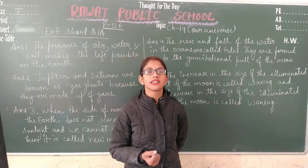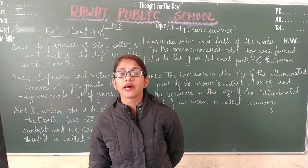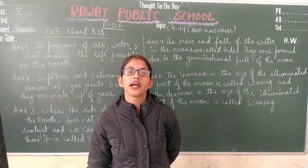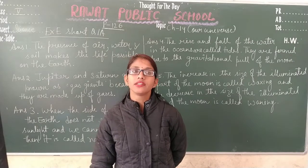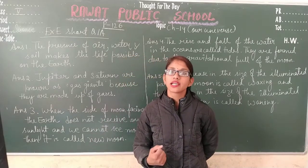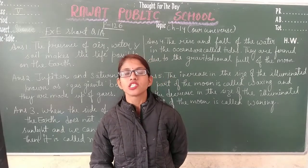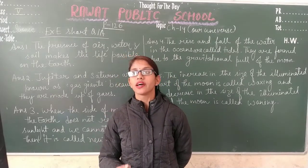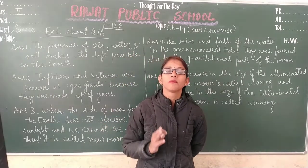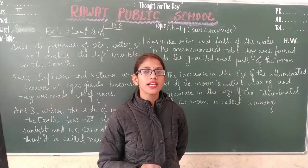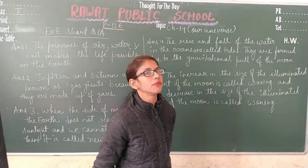After the inner planets, Jupiter and Saturn are planets which are made up of gases like hydrogen and helium. They are also very big in size. That is why they are known as gas giant planets — because they are big in size and made up of gases like hydrogen and helium.